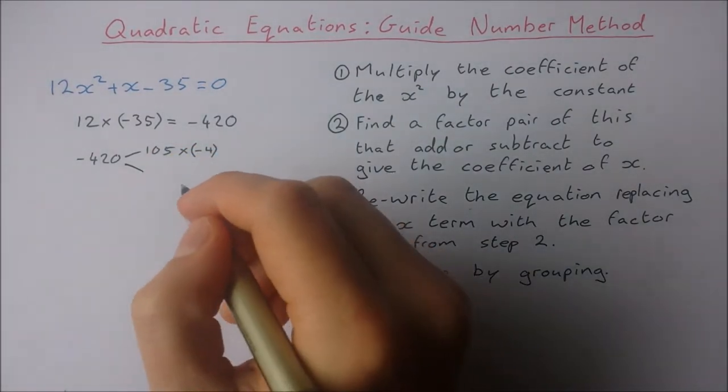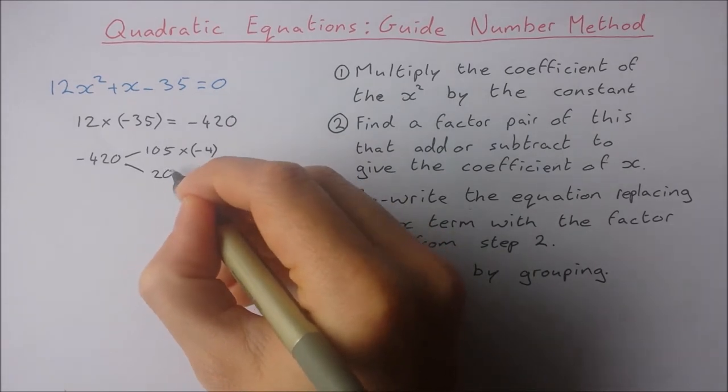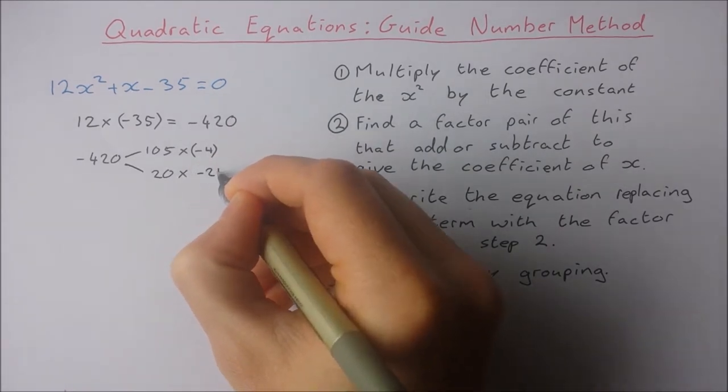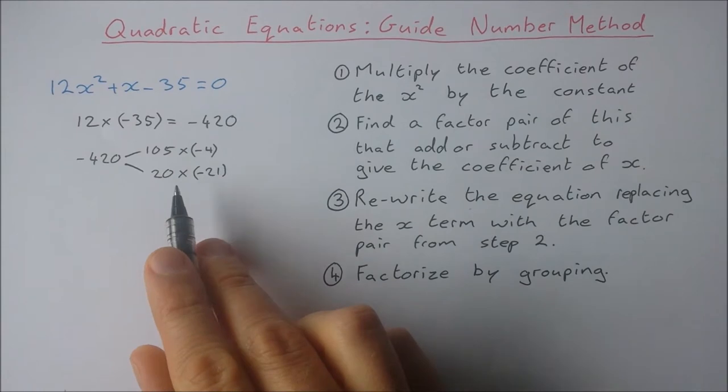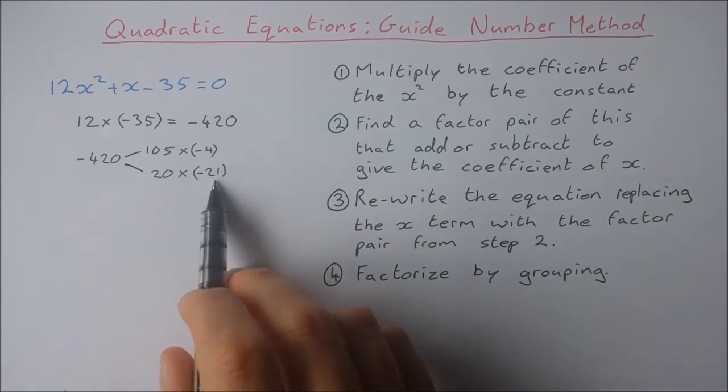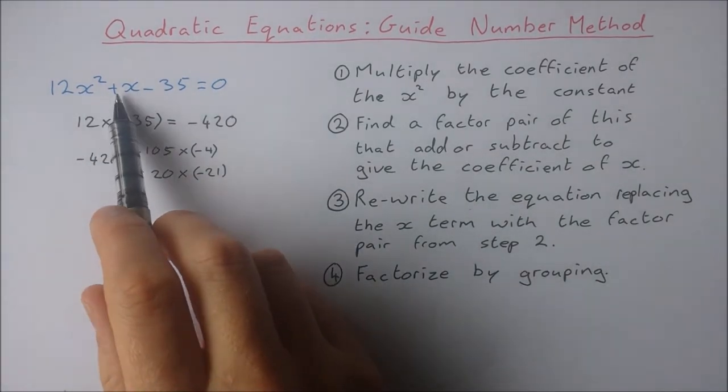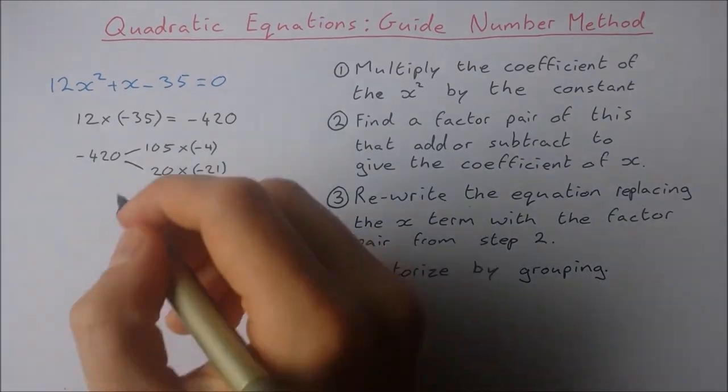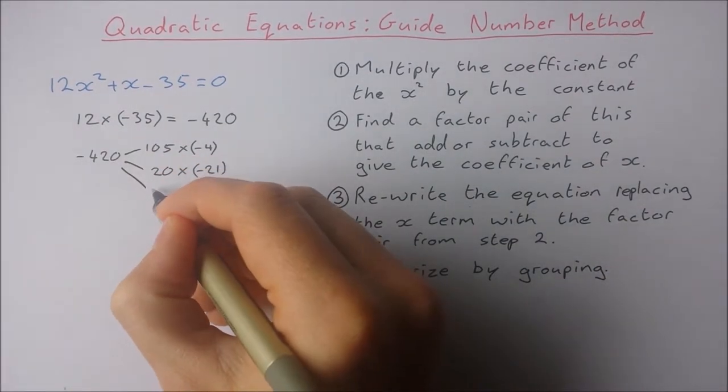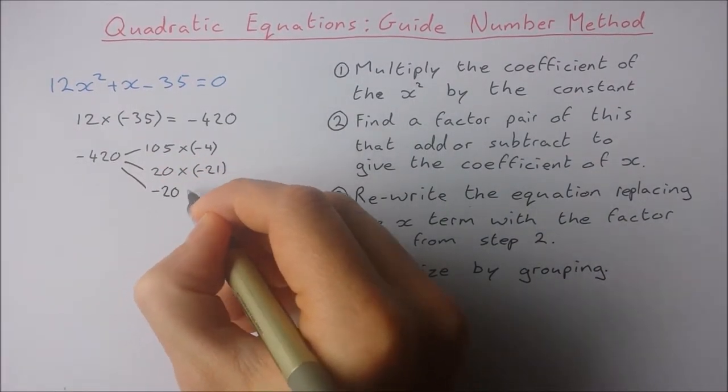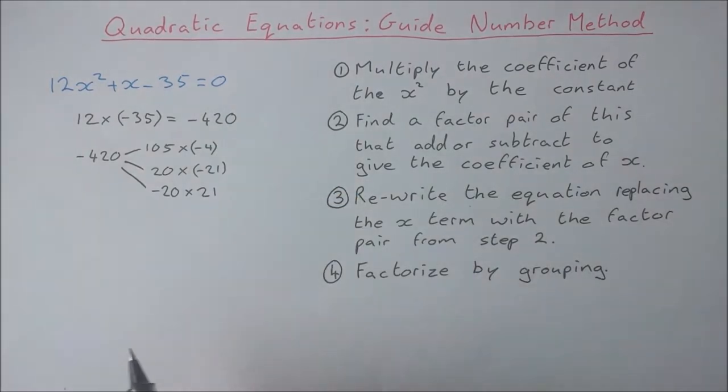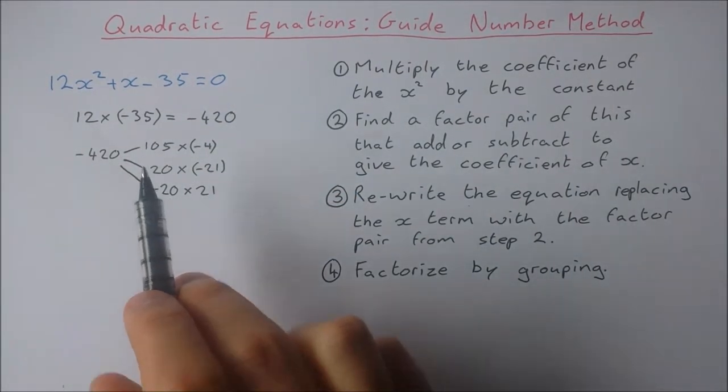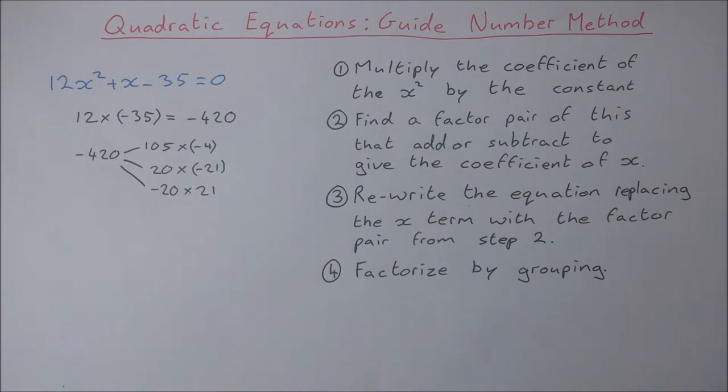So how about 20 by -21? Well these are much closer together, and if I add 20 and -21 I'm going to get -1, which isn't quite what I want. So it's actually going to be -20 times 21. 21 minus 20 gives me 1, so this factor pair adds to give me the coefficient of x.